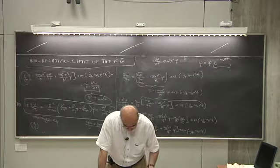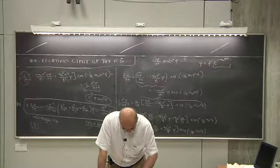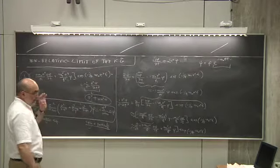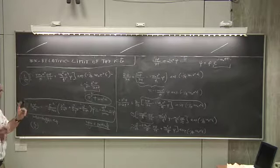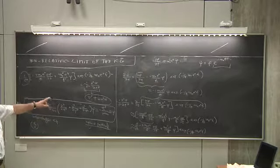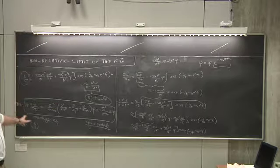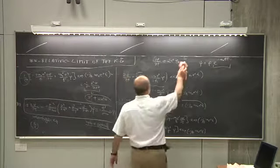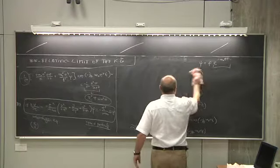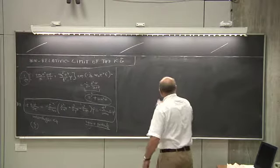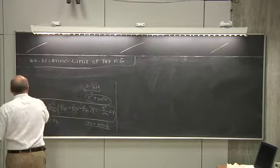Sometimes old books say spin is a relativistic effect — they have in mind the Dirac equation, which we will do later. The Klein-Gordon equation is relativistic but describes spin-zero particles. We've shown it has the correct non-relativistic limit: exactly the Schrödinger equation. The probability interpretation fails, but let's work on that.